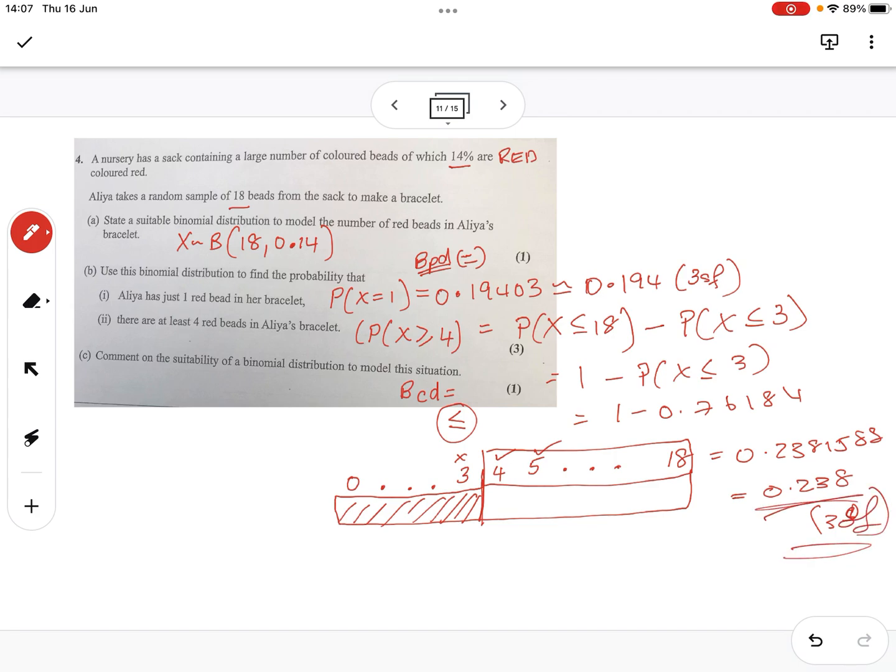If you've got the Posch calculator, go to cumulative for both of these. Put 1 and 1 in your lower and higher for the first part. Here put 4 as the lower and 18 as the higher, because that's the maximum you can get. Or if you're used to putting 999, that's fine.